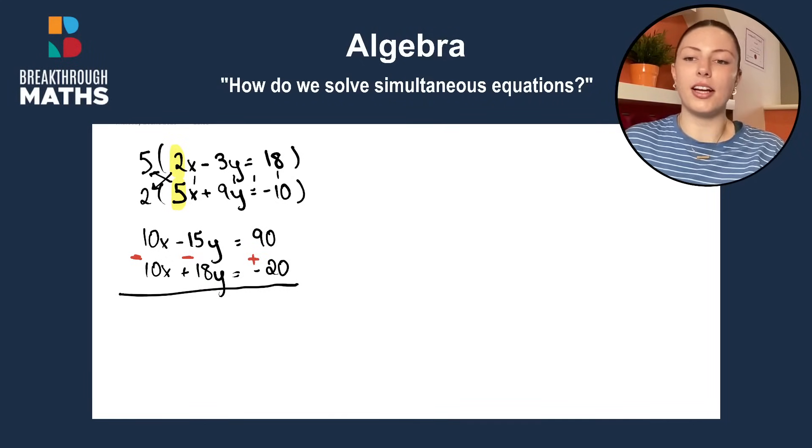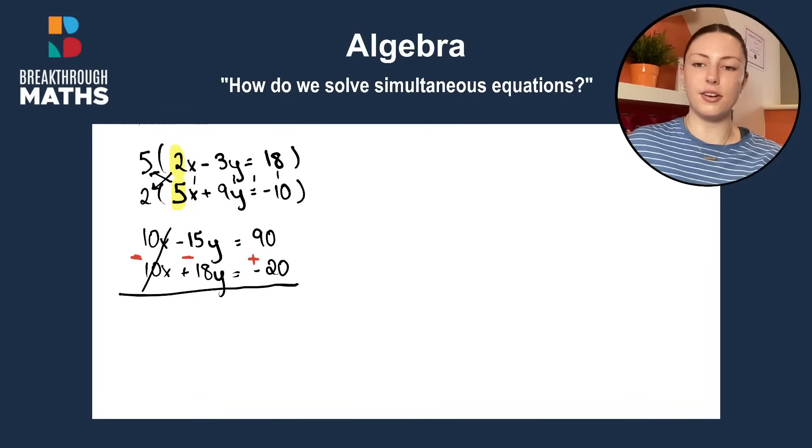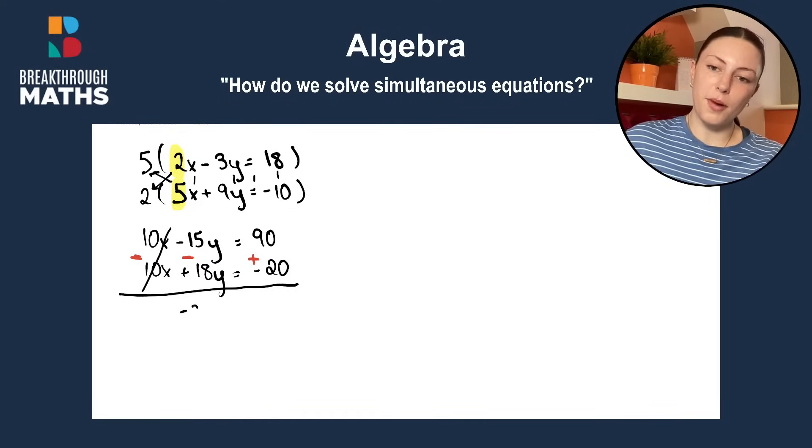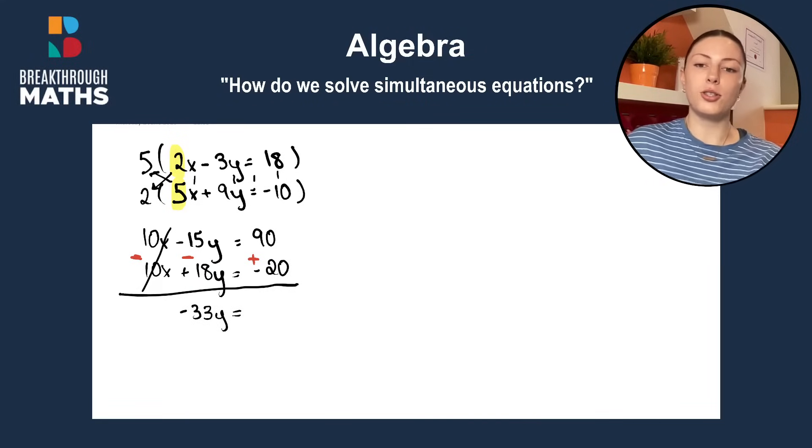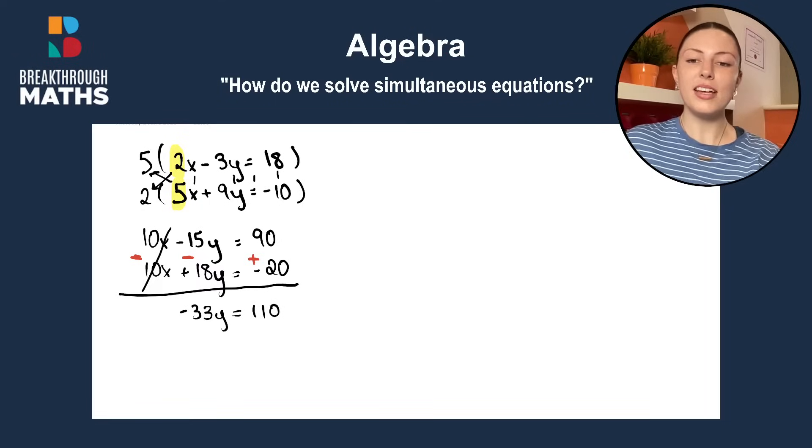Okay, and now we go back to solving. So, 10x minus 10x cancels out and gives us zero. Minus 15y minus 18y gives us minus 33y. And then we have 90 plus 20 and that gives us 110.